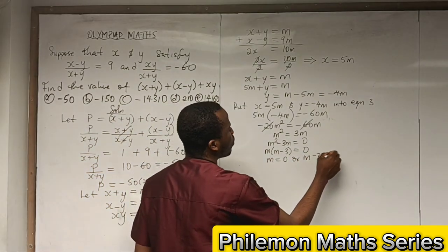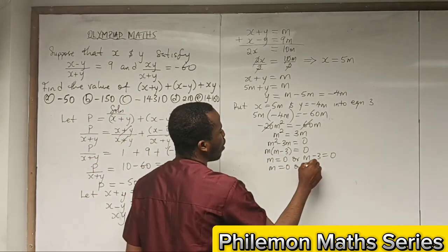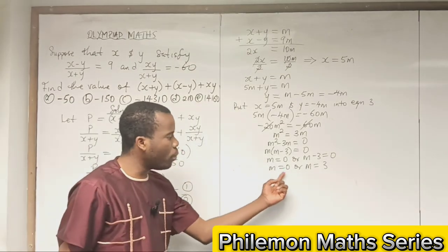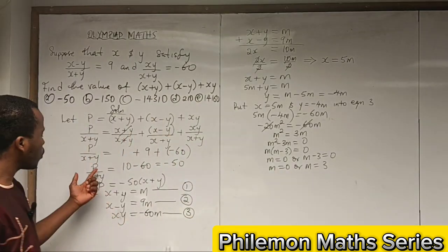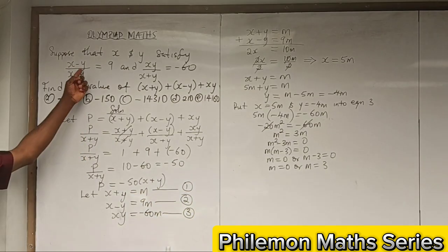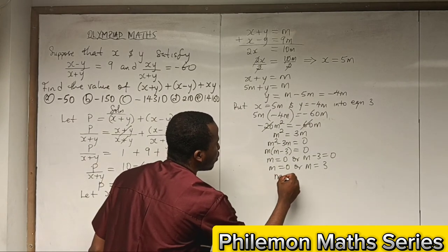But we cannot take m = 0 because if we do that, the division here will be undefined. So m = 3.